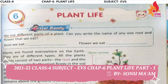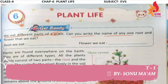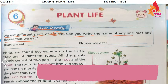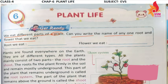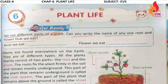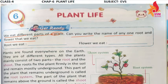We eat different parts of the plant. Can you write the name of any one food and flower that we eat? Look at the last chapter — we have seen different types of plants, their leaves. We have seen lots of things. What did we study about plants? In this chapter, we will study about plants and their life.